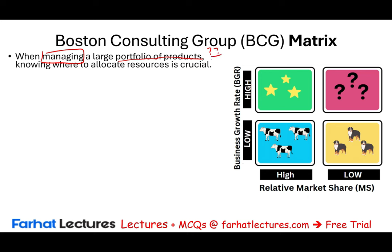What does that mean? Often companies don't own one product — they run many products. Think of Google: they have Google Search, Google Ads, YouTube, Android, Google Drive, Google Cloud Platforms, and many more. So Google needs to know how to allocate resources to various products because not all products are the same.